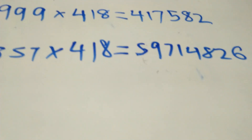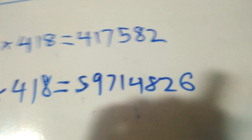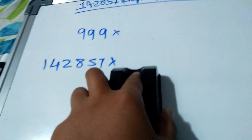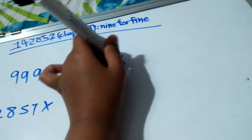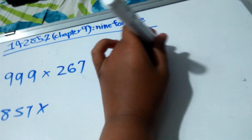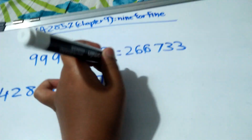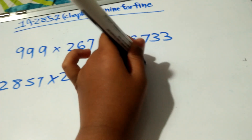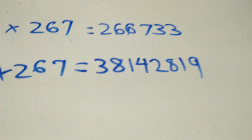The possibility is that 999 and 142857 have a connection — just take any number and 142857 will use its digits. For example, take 267 — this will become 266733. Or take 38, 142, and 819 — the digits of 142857 cycle through the multiplication.